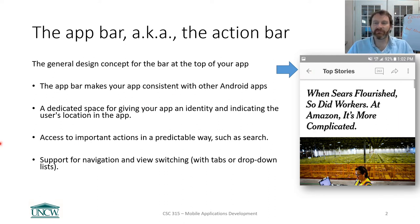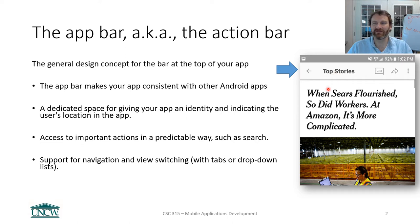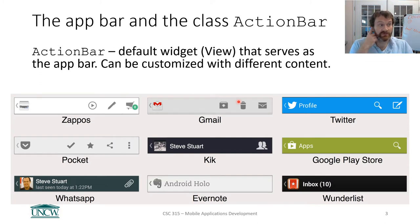Pretty much every app has an app bar, except maybe some games or movies in full-screen mode. You get used to expecting it to be there with at least a title and a back button. We've become trained through using apps to just expect this thing to be there. Users know that navigation and important actions are found at the top.